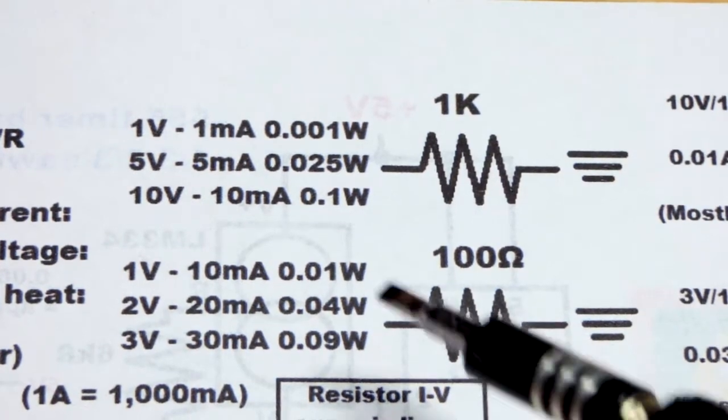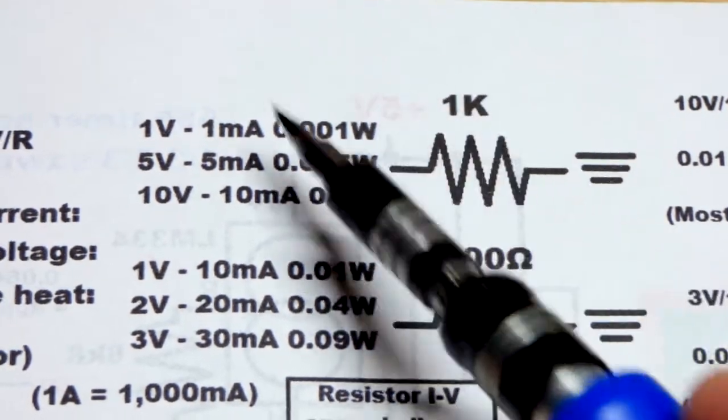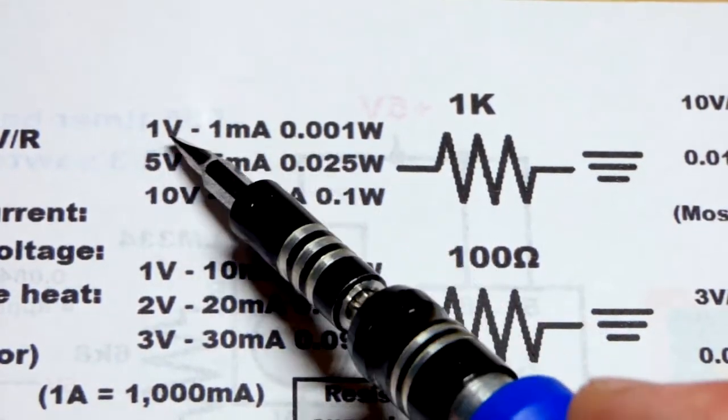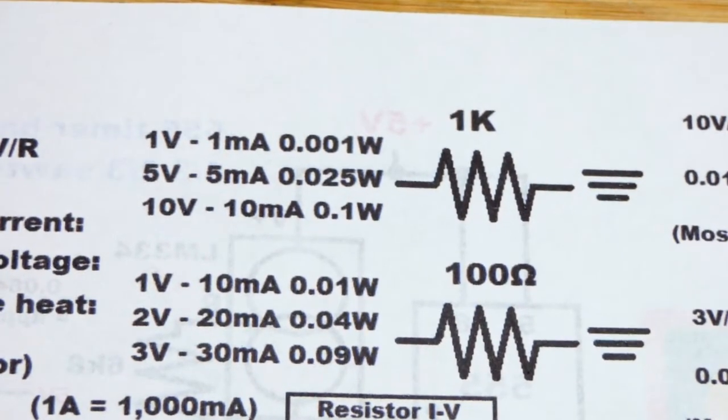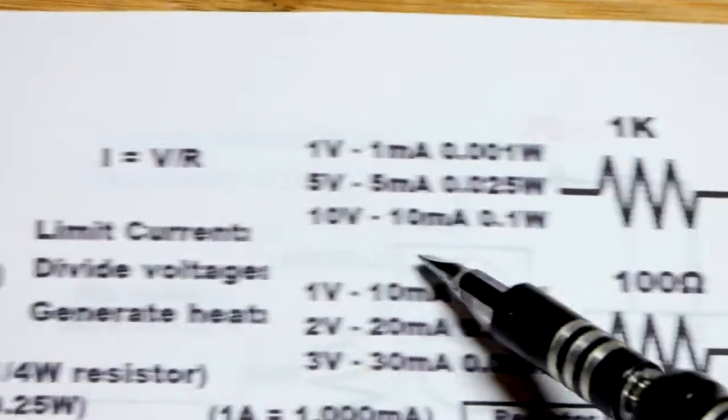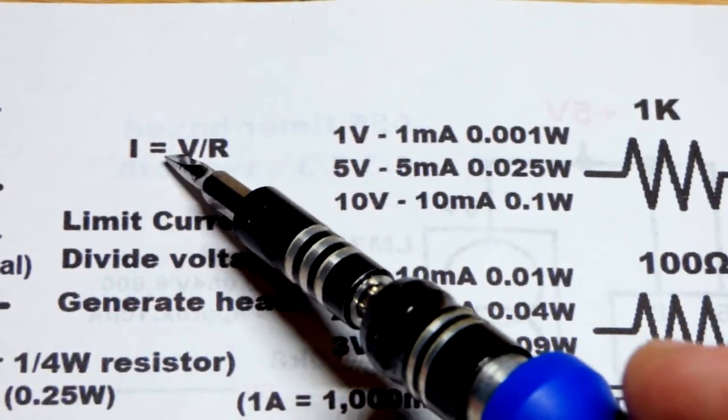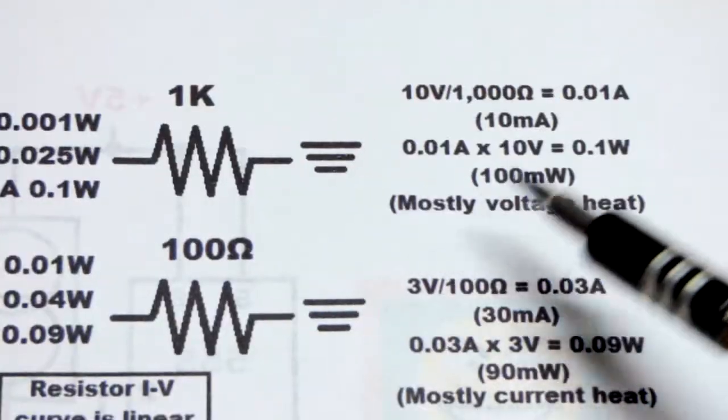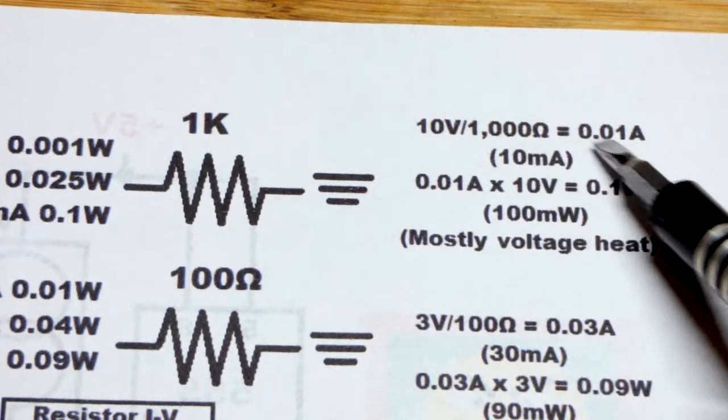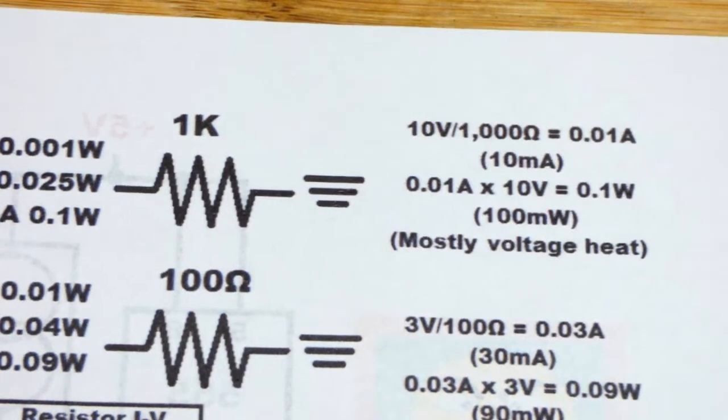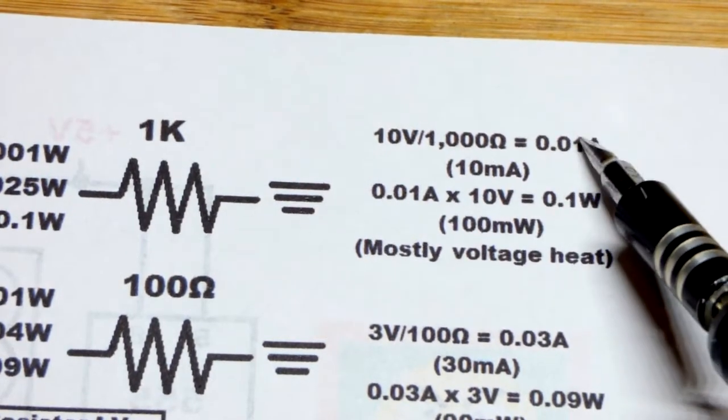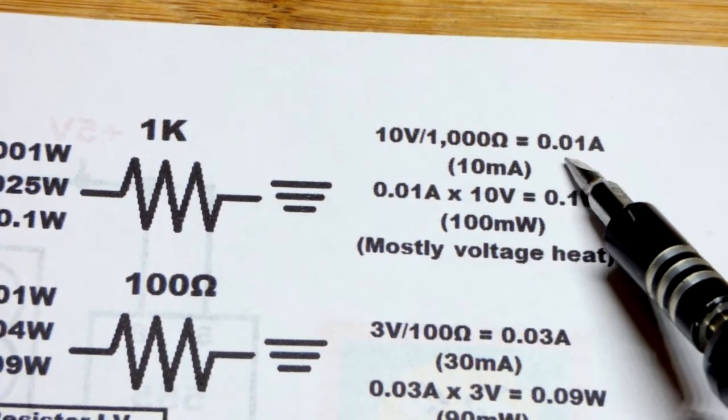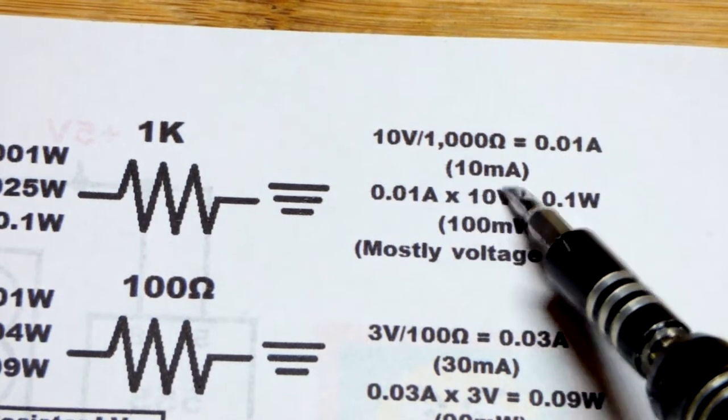Now, the one kilo ohm resistor is extremely nice because for each volt across it, one volt, one milliamp, five volts, five milliamps, ten volts, ten milliamps. Each volt across it is one milliamp of current. Now, not so nice, so that's just current in amps equals voltage in volts divided by resistance in ohms. So I did the math for the ten volts right there, ten volts divided by a thousand ohms equals 0.01 amps. So this is basic math. I'm not going to get into it too much, but in case, generally we convert that to milliamps because milliamps just sounds better than point something of an amp. So that's ten milliamps.